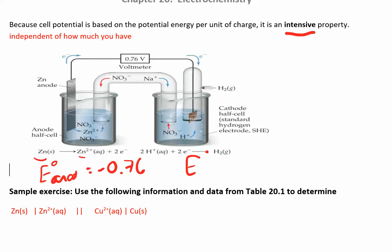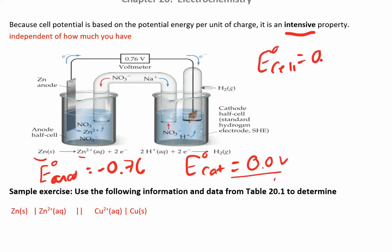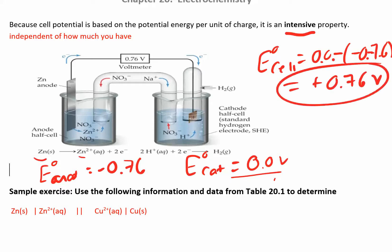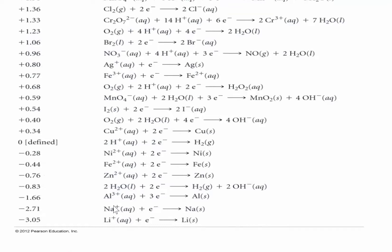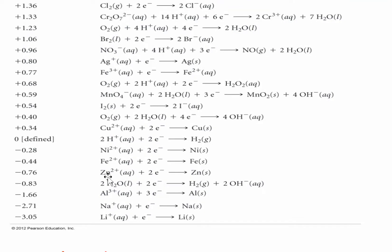The E° of the anode is −0.76 V, and the E° of the cathode is the standard hydrogen electrode, which is zero. So to find E°cell: cathode minus anode = 0 − (−0.76) = +0.76 V. Even though one of these is an oxidation reaction, when you look it up in the table, just look up zinc and zinc²⁺ and pull that number right out. Don't change it at all — it is whatever it is.